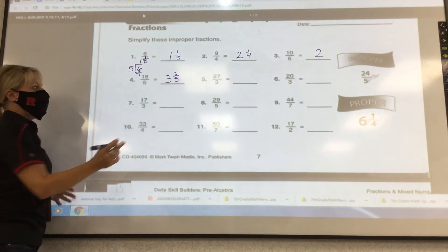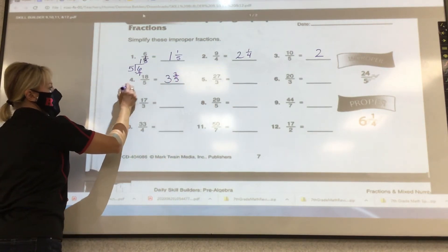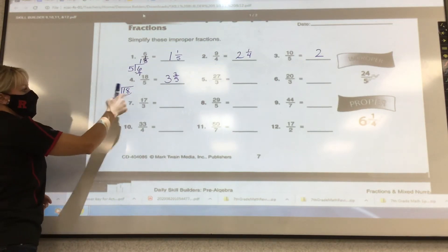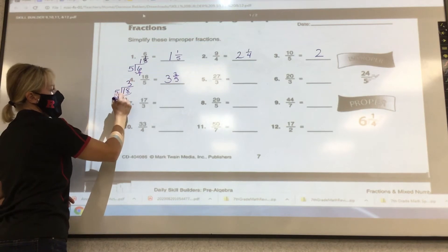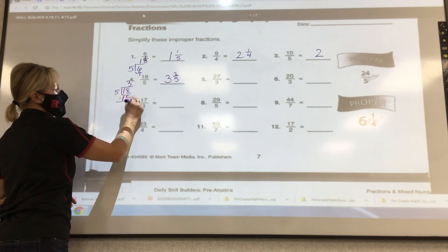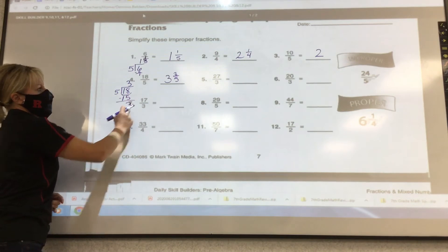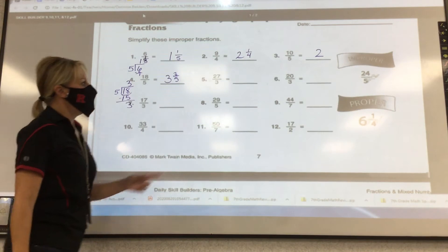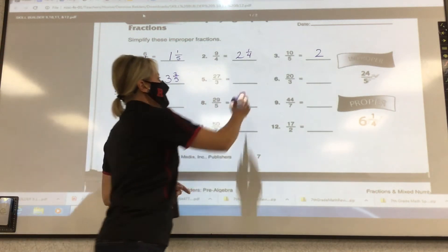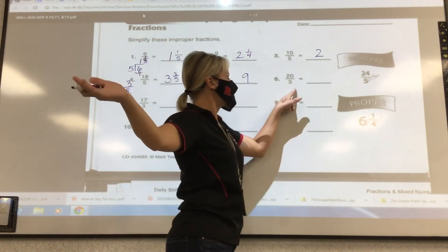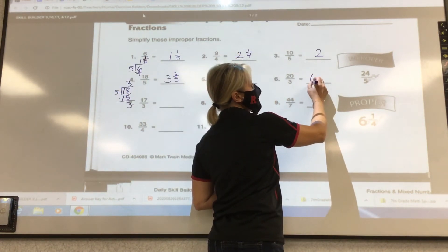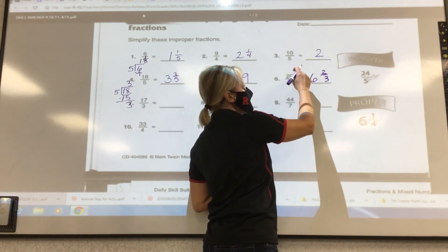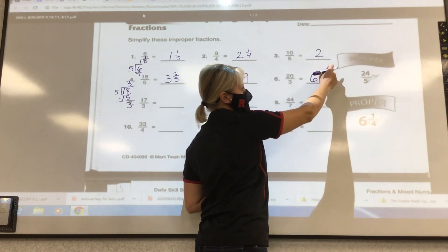18/5. 3 and 3/5. For some of you that cannot do that, it would be 18 divided by 5. 5 goes into 18 three times. 3 times 5 is 15. 18 minus 15 is 3. So the 3 goes on the top, and whatever you're dividing by stays on the bottom.